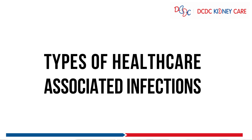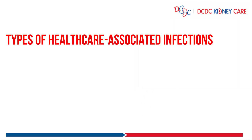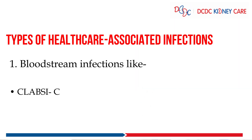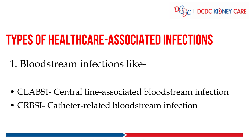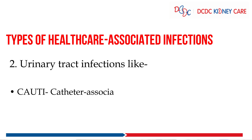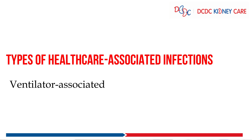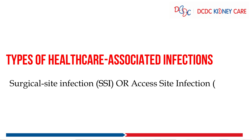There are 4 types of healthcare associated infections. Number one is Bloodstream Infection, which has 2 categories: CLABSI and CRBSI. CLABSI stands for Central Line Associated Bloodstream Infection, and CRBSI stands for Catheter Related Bloodstream Infection. Second is CAUTI, that is Catheter Associated Urinary Tract Infection. Third is Ventilator Associated Pneumonia, that is VAP. And lastly, Surgical Site Infection, that is SSI.